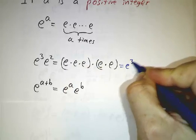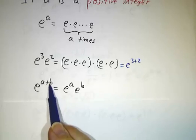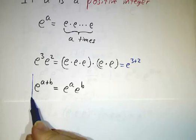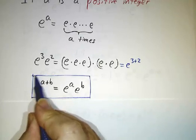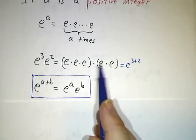So this is e to the 3 plus 2. And in general, we have the rule that e to the a plus b is e to the a times e to the b. And that's a really good rule, it's really useful. And it makes perfect sense if a and b are positive integers, because all you're doing is you're counting factors.